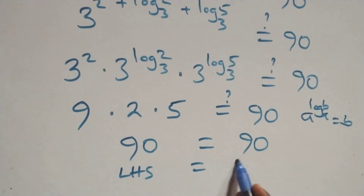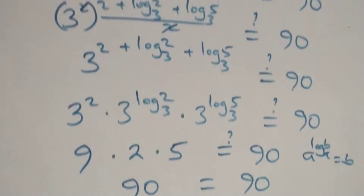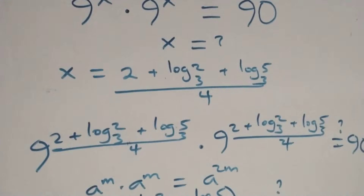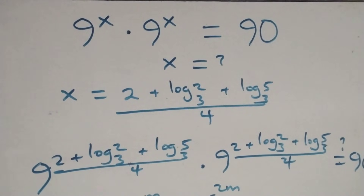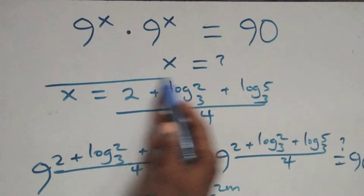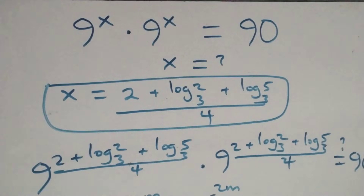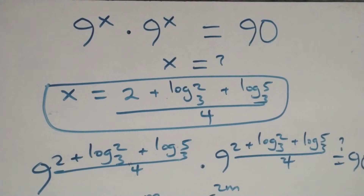This equals the right-hand side, and therefore we conclude that x equals 2 plus log base 3 of 2 plus log base 3 of 5, all over 4 satisfies the given equation. Thank you for watching — don't forget to subscribe for more videos, turn on notifications, share this video, give a thumbs up, and join our membership package. See you next class, bye for now.